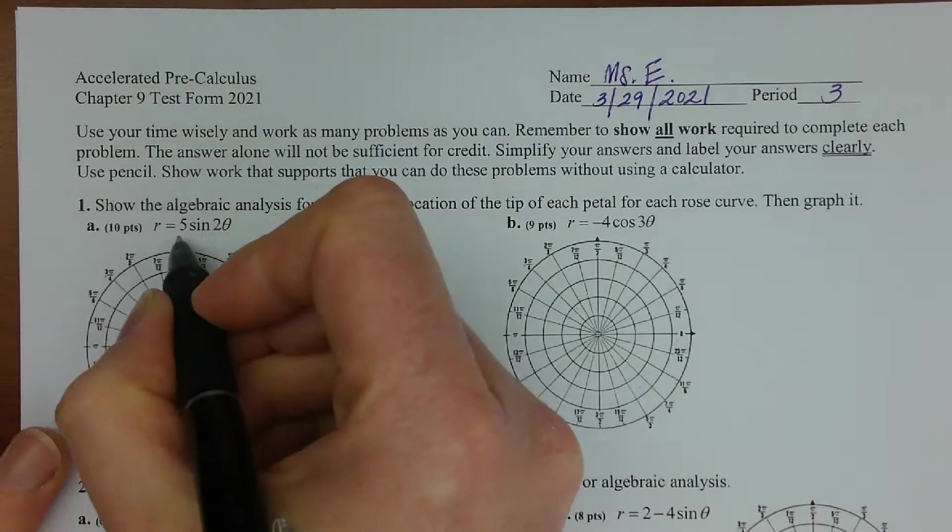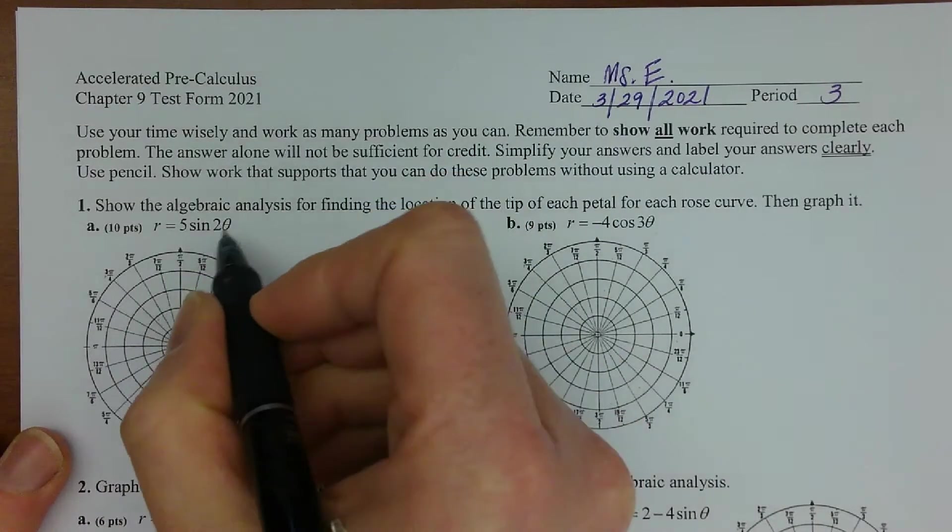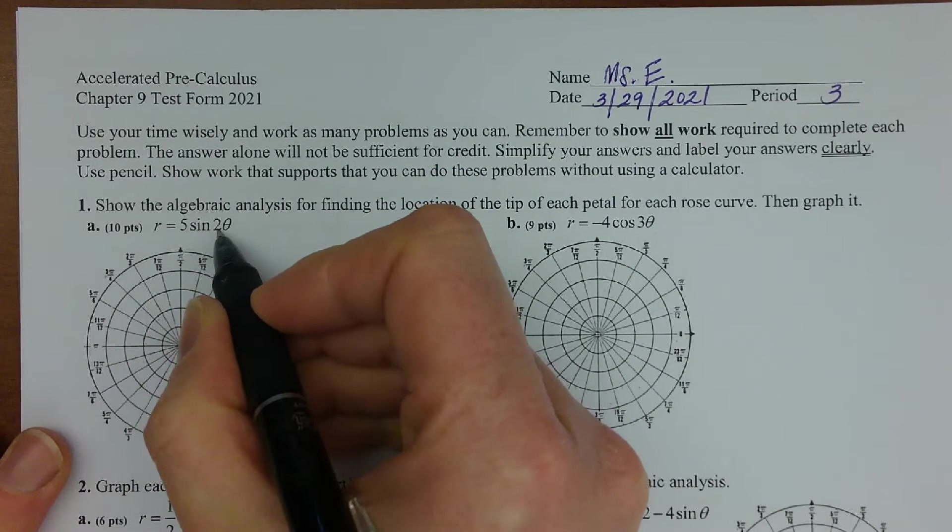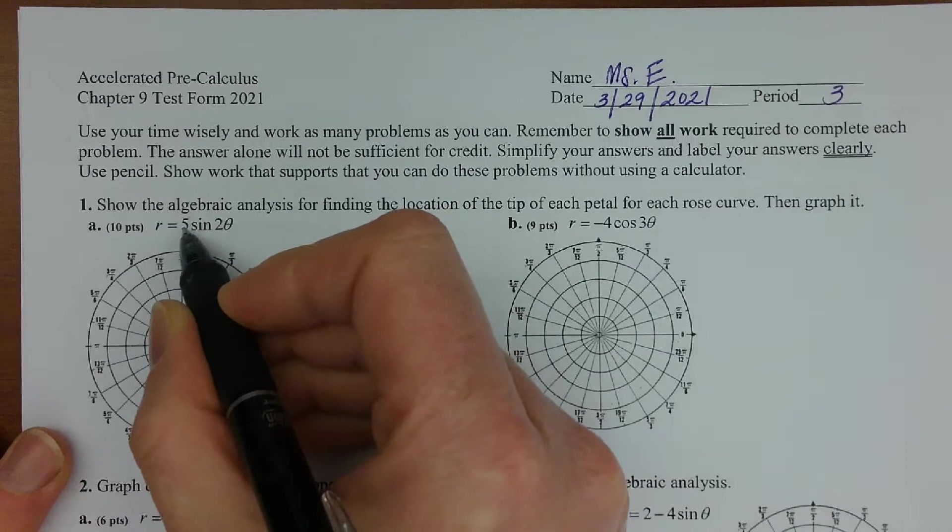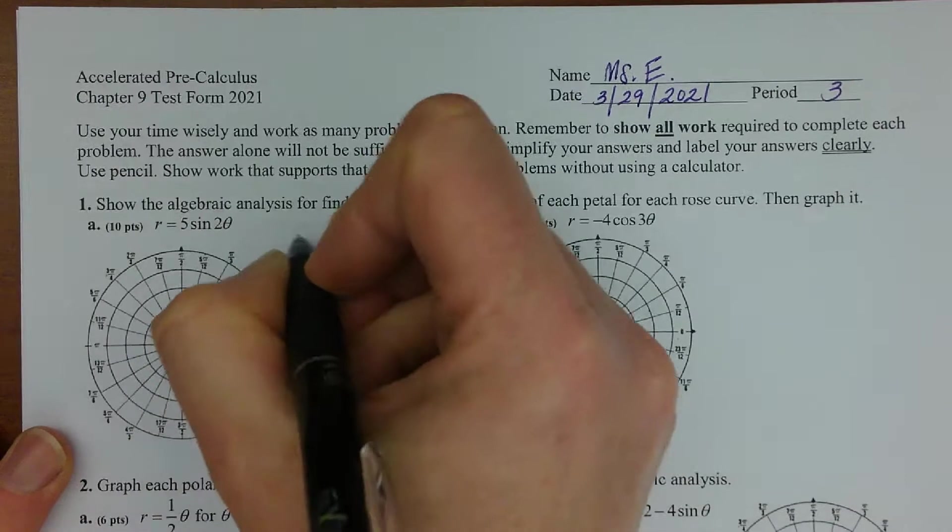Alright let's get started here. So it says r equals 5 sine 2 theta. Going in hoping that everybody was expecting double this number of petals, so four petals of length five.